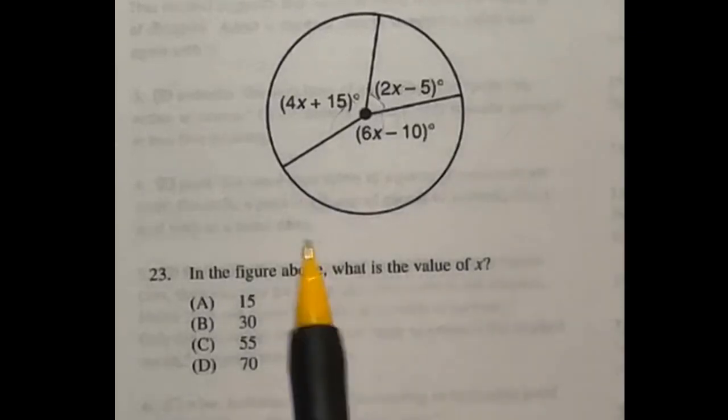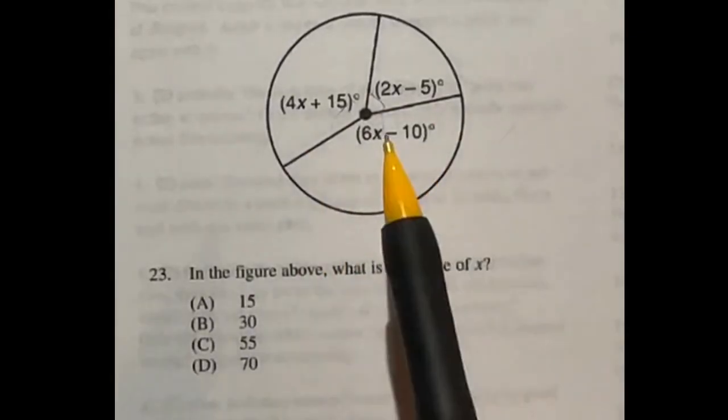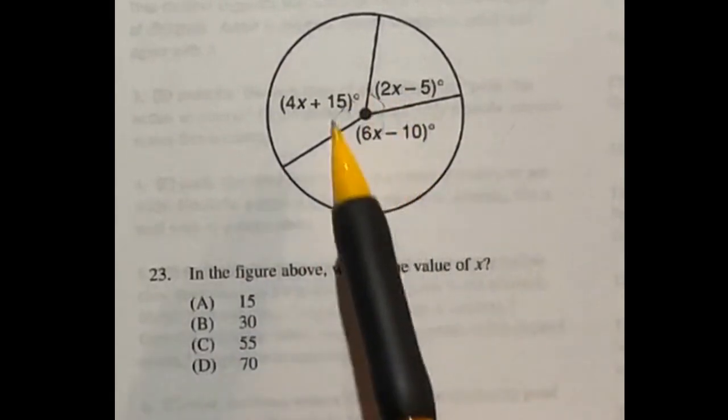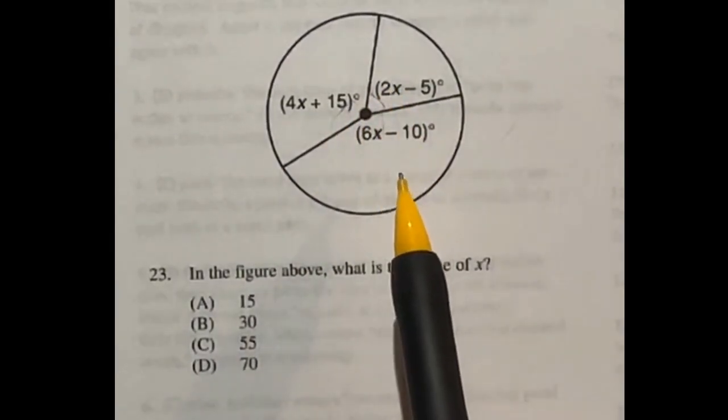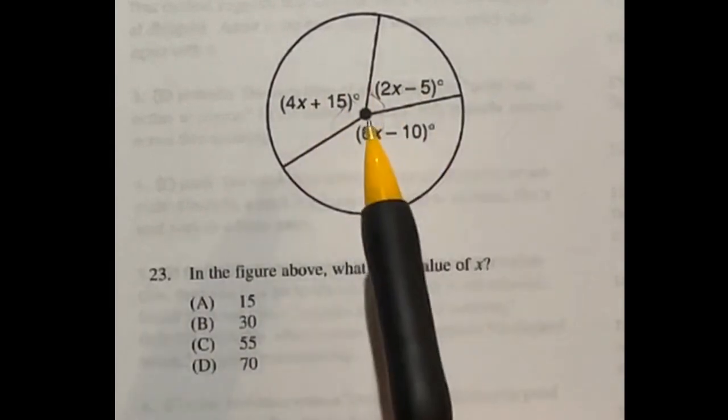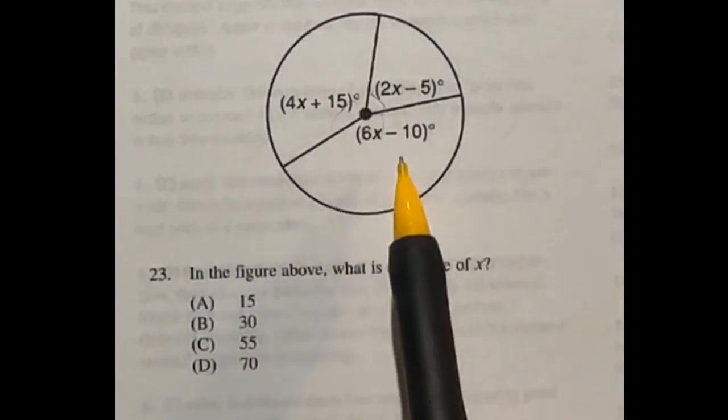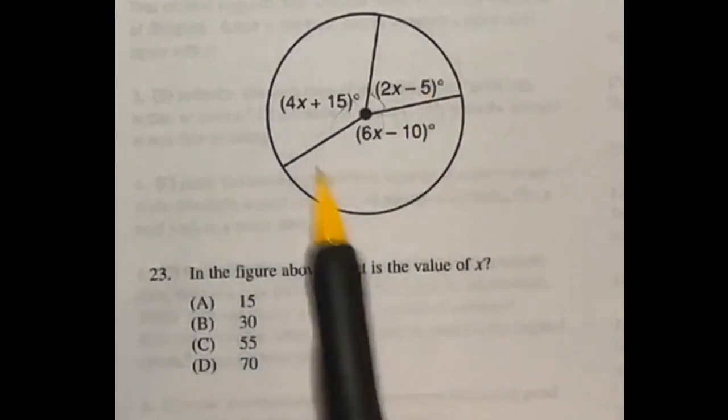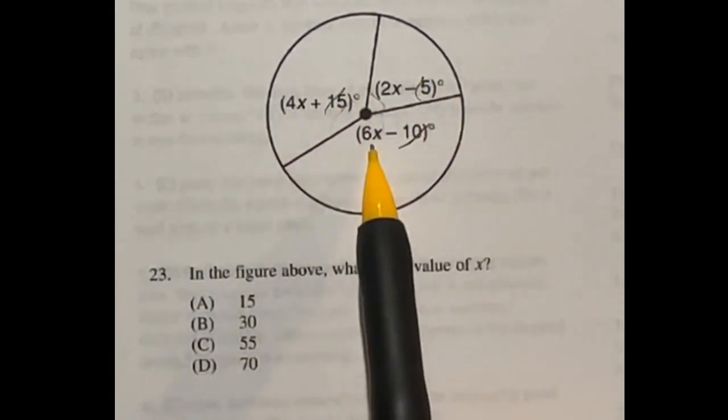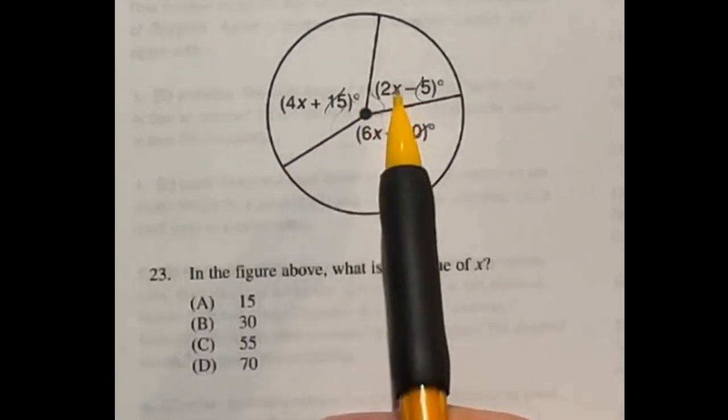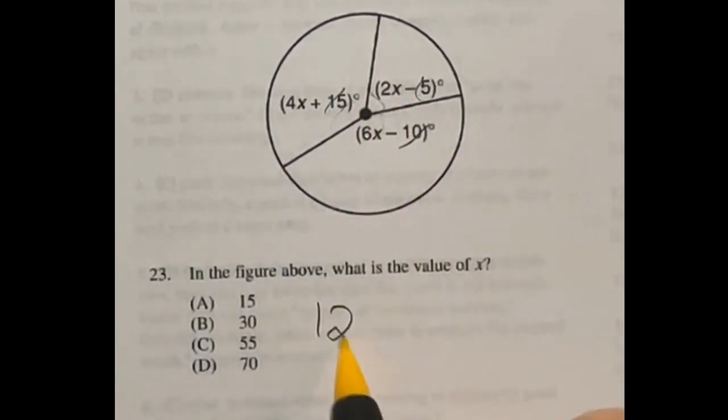So for number 23, we have to find the value of x in this figure up here. Well, I know that a full circle is 360 degrees, so if we add these three together, it should give me 360. So let's go ahead and add them together by combining like terms. 15 minus 10 minus 5 is actually going to give me a 0, so all of those will cancel out. So then we have 4x plus 6x is going to be 10x, plus another 2 is going to give me 12x.